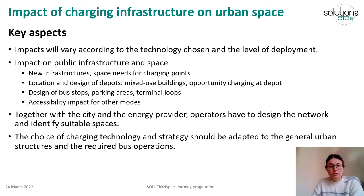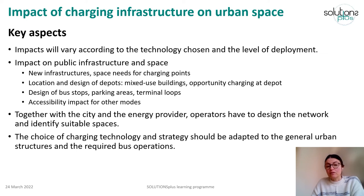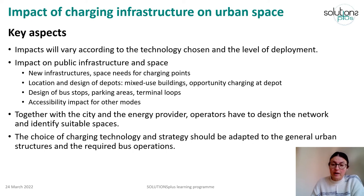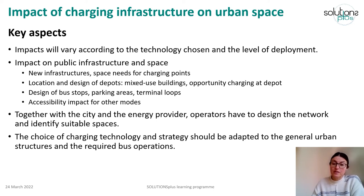Finally, before we go to the examples, to be clear again that the technology choice and the strategy will most likely need to be adapted to the general urban structures and the required operations. So there are two levels of alignment to keep in mind: the requirements of the service and the line, and the requirements of the city when it comes to urban landscape guidance.